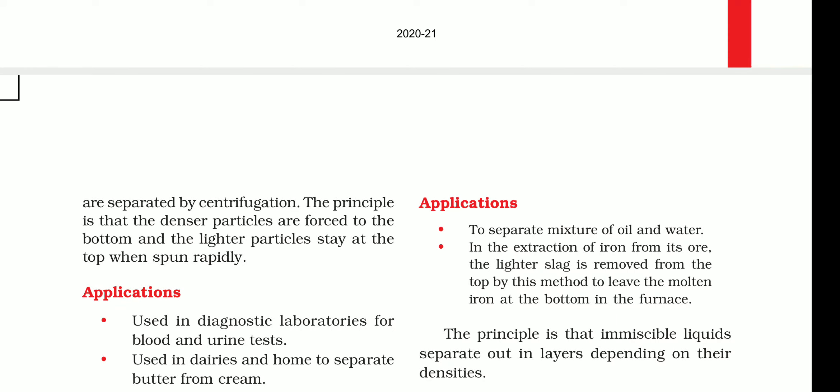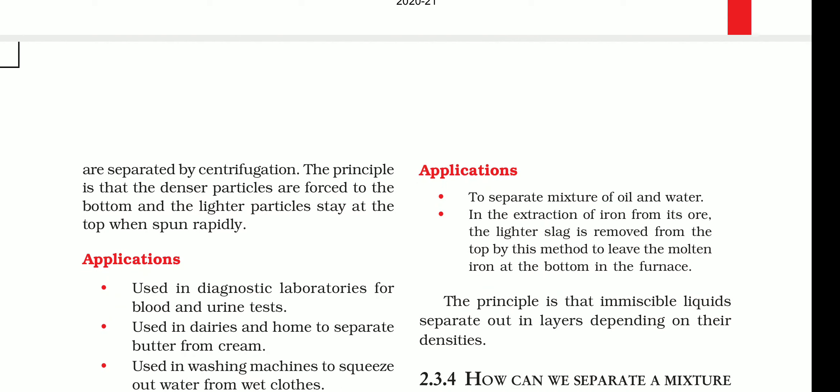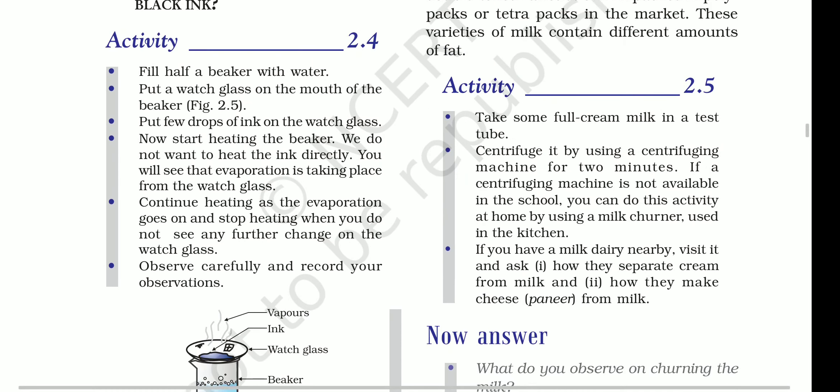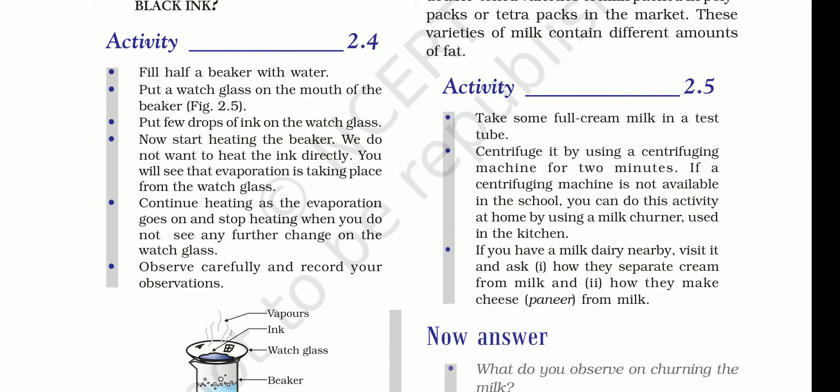In centrifugation, the heavier particles settle at the bottom while the lighter particles stay at the top. Activity 2.5: take some full cream milk in a test tube and centrifuge it using a centrifuging machine for 2 minutes. If a centrifuging machine is not available at school, you can do this activity at home using a milk churner from the kitchen.